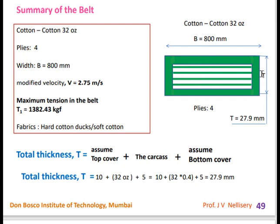To calculate the total belt thickness: total thickness = top cover + carcass (body) + bottom cover. Top cover = 10 mm rubber, bottom cover = 5 mm. For 32 oz, thickness in mm = 32 × 0.4 = 12.8 mm (carcass). Therefore, total belt thickness = 10 + 12.8 + 5 = 27.8 mm ≈ 27.9 mm.